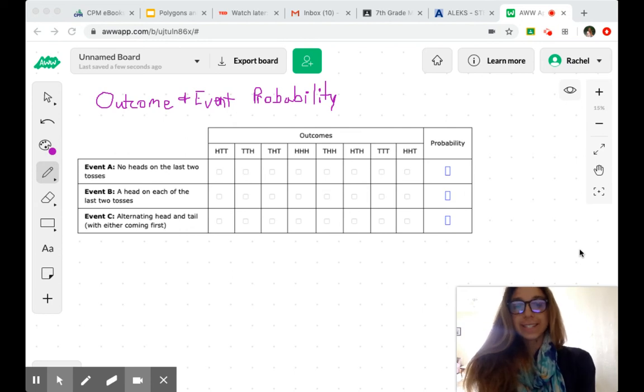This video is intended to help with the Alex topic outcome and event probability in the statistics and probability pie slice. What we're looking at here are possible situations and then the likeliness that each one will occur.